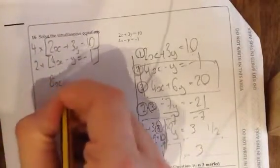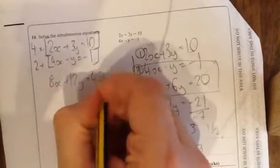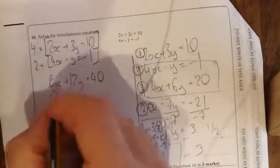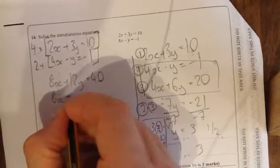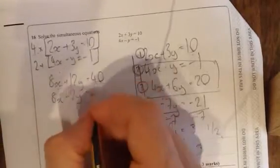4 times 2x is 8x. 4 times 3 is 12y. 4 times 10 is 40. 2 times 4 gives you 8x. 2 times minus 1y is minus 2y. 2 times minus 1 is minus 2.